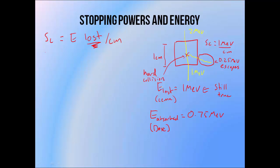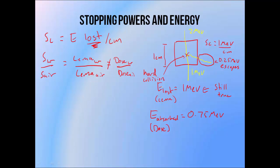A collision stopping power ratio — like the water-to-air ratio used to convert ionization chamber measurements to dose to water — is the ratio of the SEMA in the two media, the amount of energy released, not the ratio of doses. So the collision stopping power ratio isn't a rigorously accurate conversion of dose measured in one medium to dose in another.